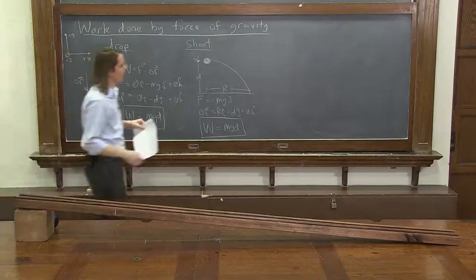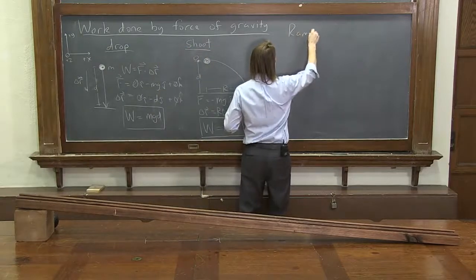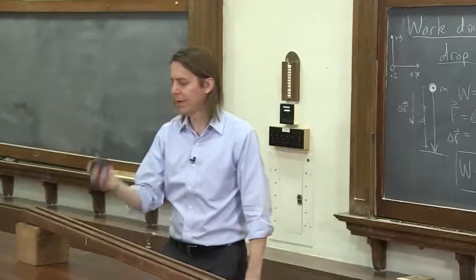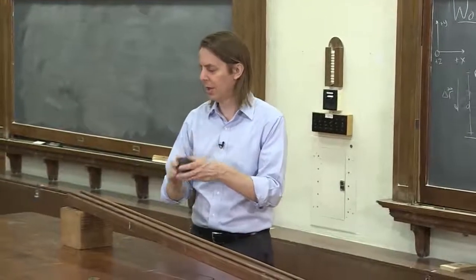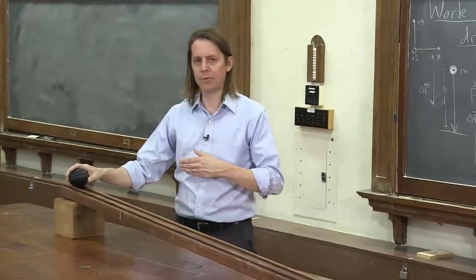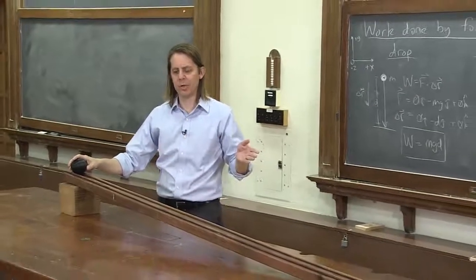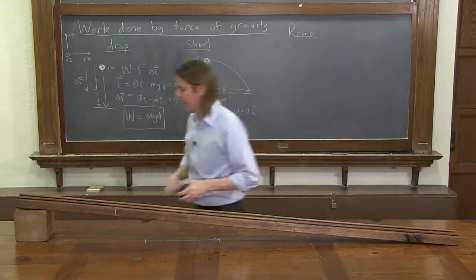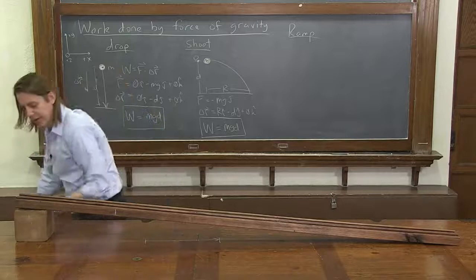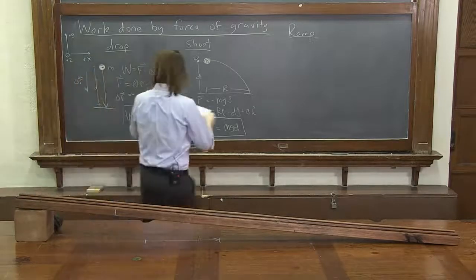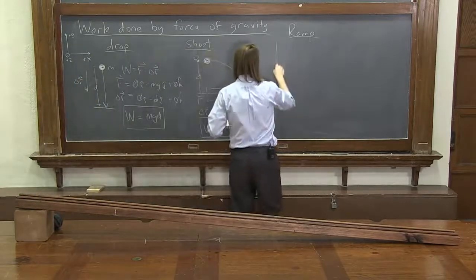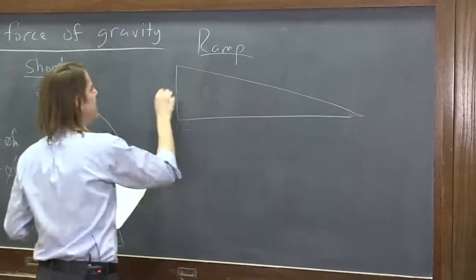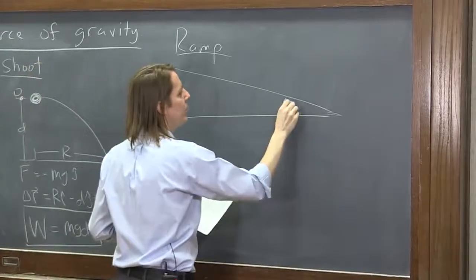We'll talk about what that means in a minute. Let's do one more. Let's do a ramp. So here I have a one-dimensional ramp set up and Frank is going to roll down the ramp for us. So Frank is here. He's feeling a gravitational force and it's going to push him down the ramp. So we're going to figure out how much work is being done down the ramp. Here we go. So let me draw that real quick. So it looks a little bit like this. Let's imagine it went down the same distance d.